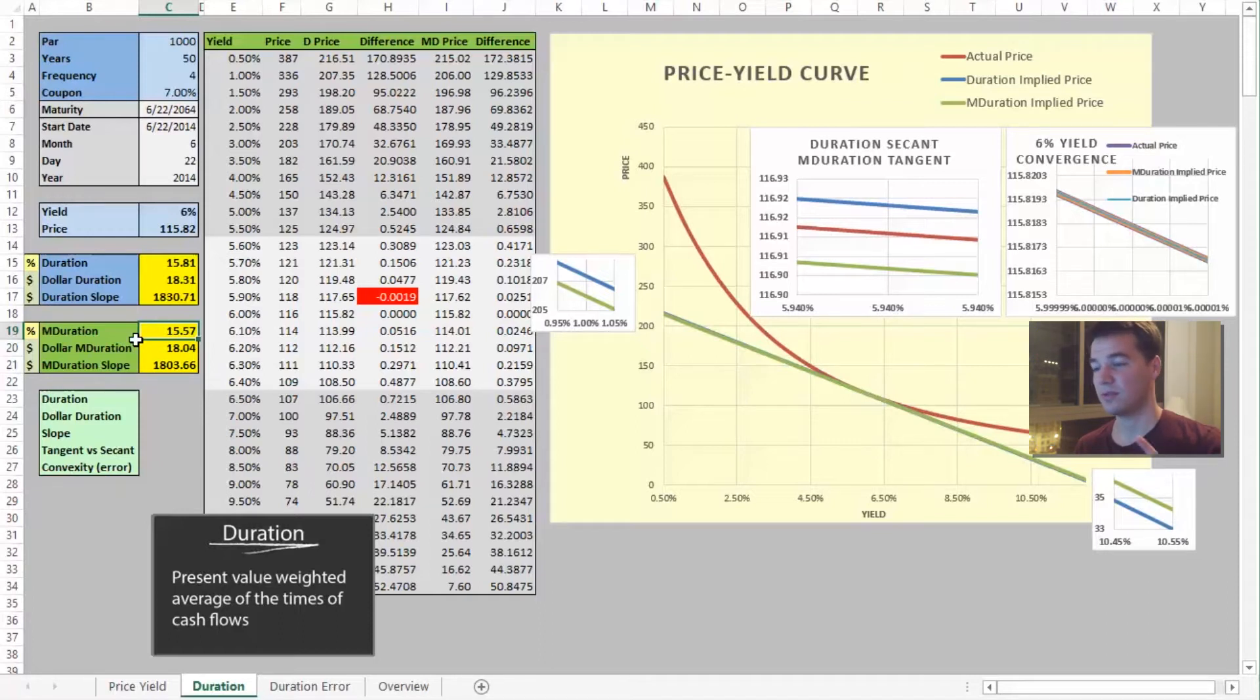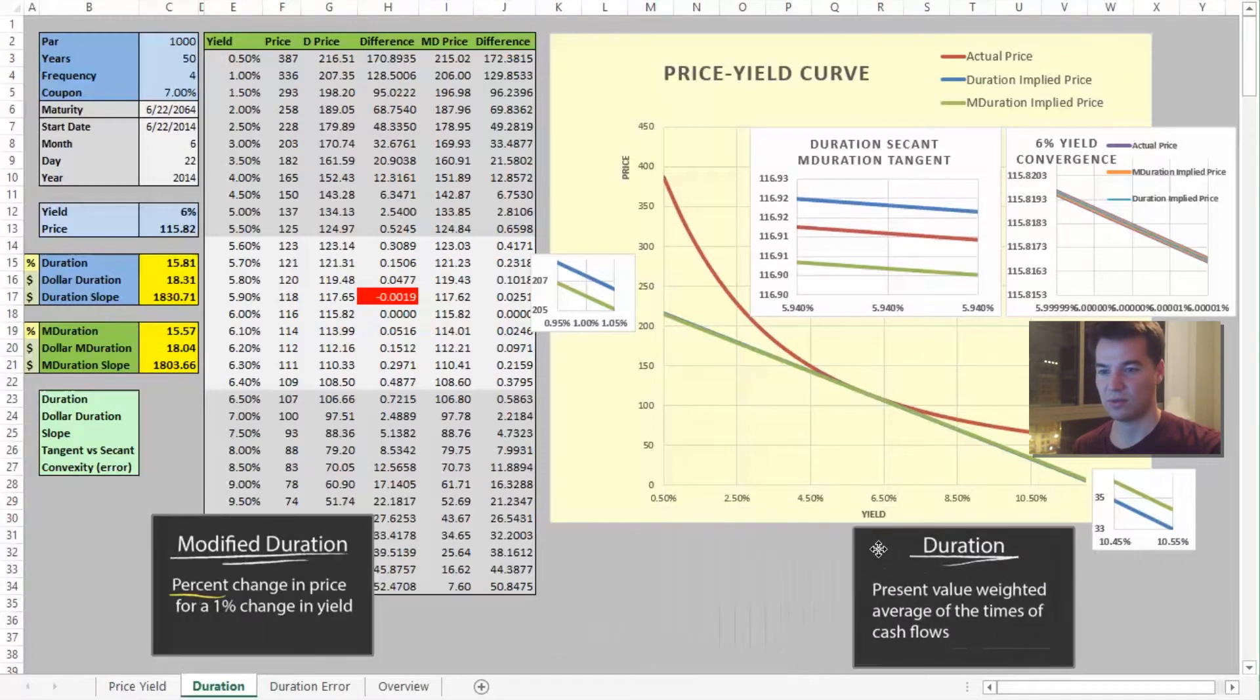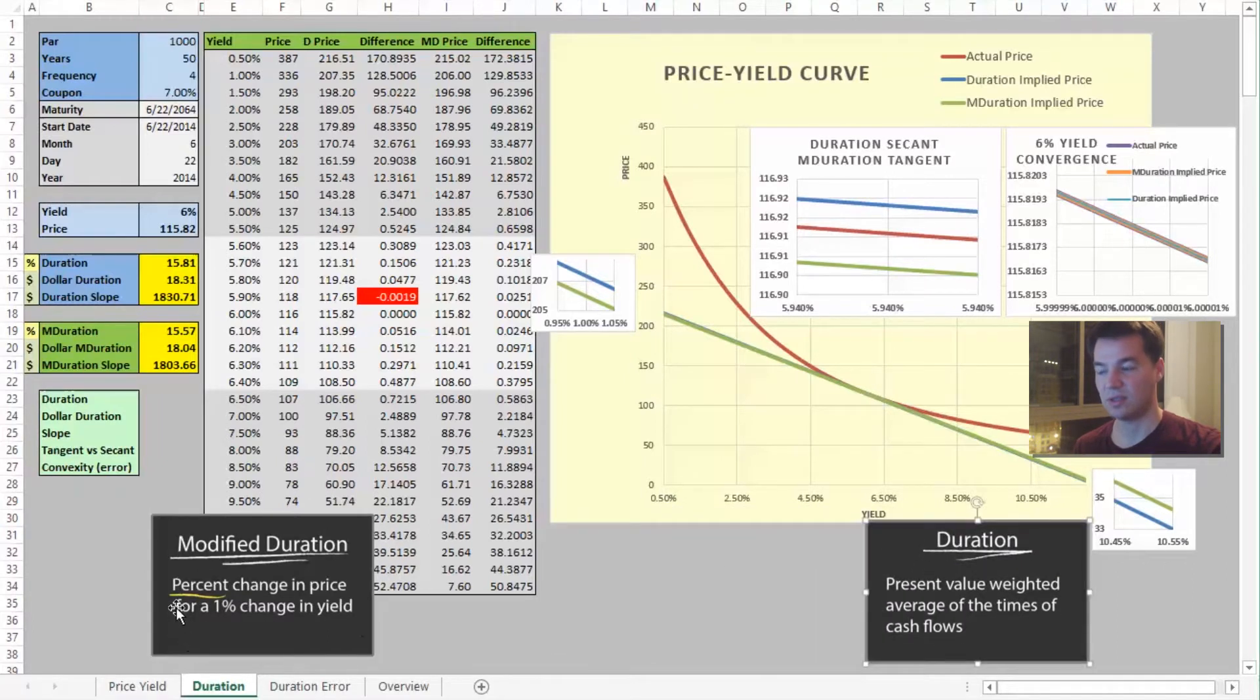Our technical term for duration is actually, it is the present value weighted average of the times of cash flows. It's very wordy. Don't really think about it too much. We'll probably just throw you off initially. But it's used the same way as modified duration, which is the percent change in price for a 1% change in yield.